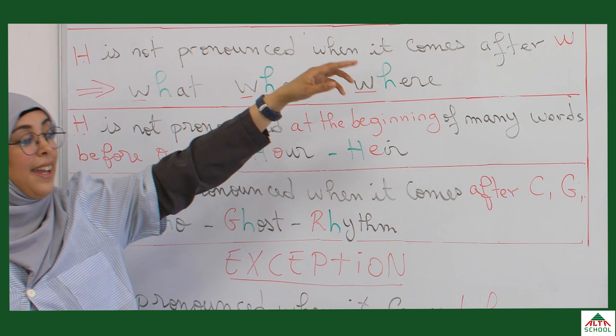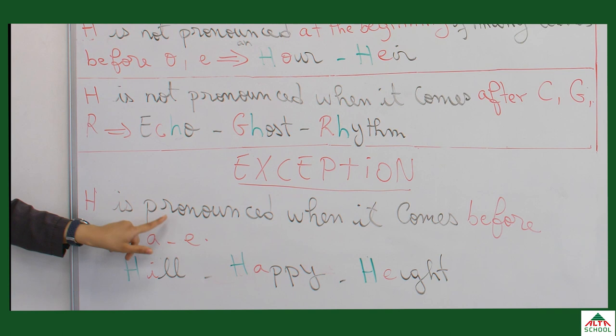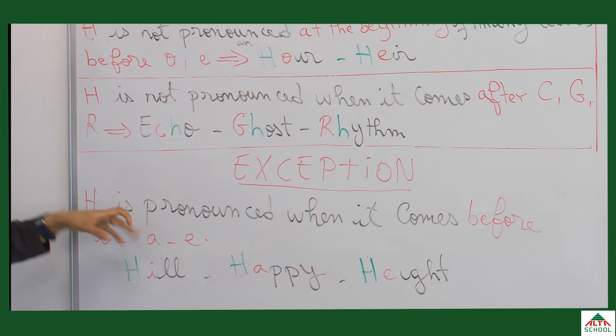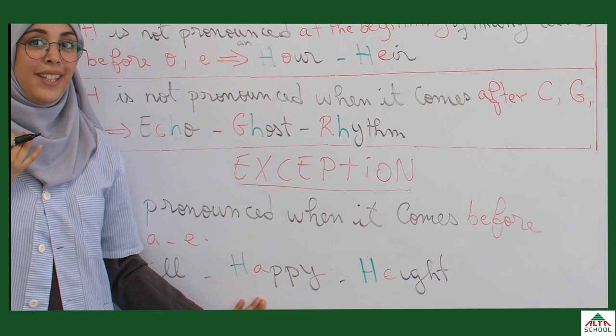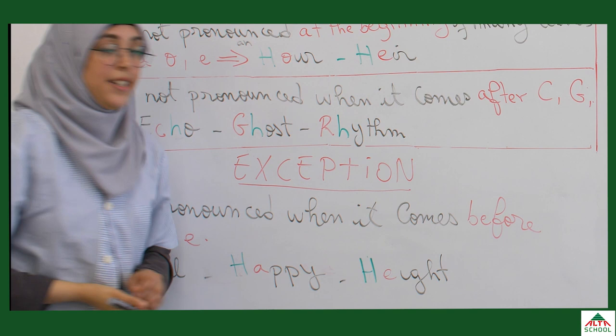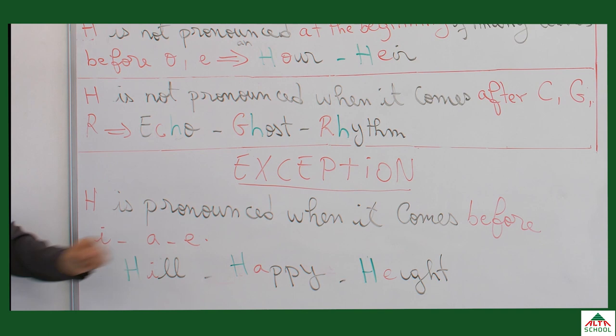Now the exception: comparing silent H and silent K, there is one exception for silent H — H is pronounced when it comes before the letters I, A, and E. For example, we say 'hill' — a hill is smaller than a mountain. We say 'happy' — I'm happy today. And 'heart'. So here the H is pronounced because we have I, A, and E after H.